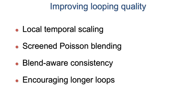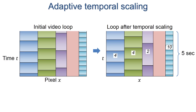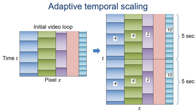We briefly illustrate our contributions for improving looping quality. Most programs cannot play videos with different per-pixel periods, so we temporally scale the content to an integer number of periods for a 5-second output, so that it can repeat as an ordinary loop.